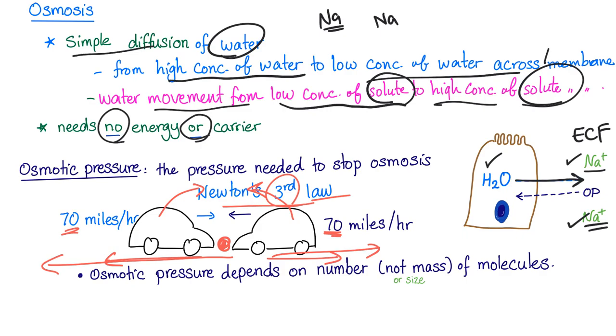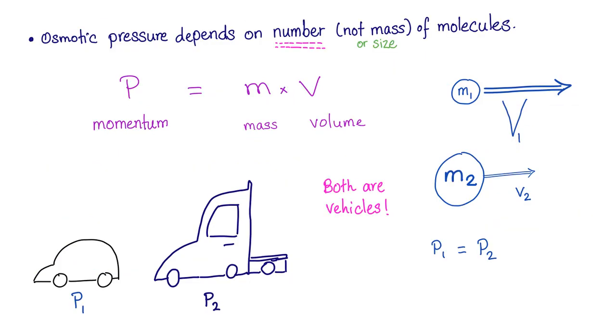So, it's hard to measure the pressure of osmosis, but it's easy to measure the pressure to stop osmosis. We keep increasing the pressure, increasing the pressure, increasing the pressure until the osmosis stops. This is the osmotic pressure. Now, the osmotic pressure depends on the number of molecules. Not the mass, not the size of molecules. The number. Why is that? It's complicated. With Medicosis, it's gonna be easy. Osmotic pressure depends on the number.